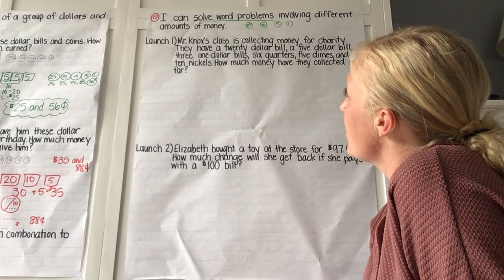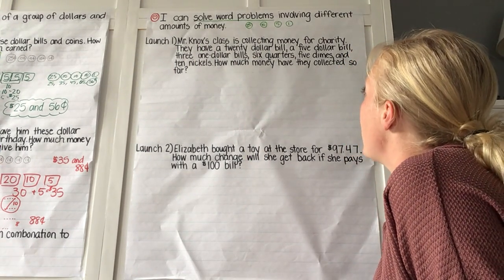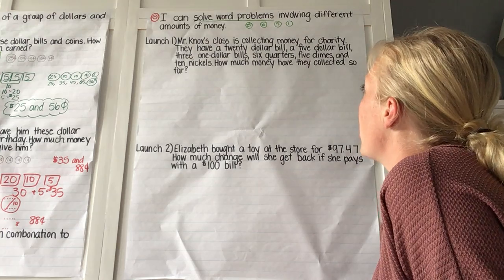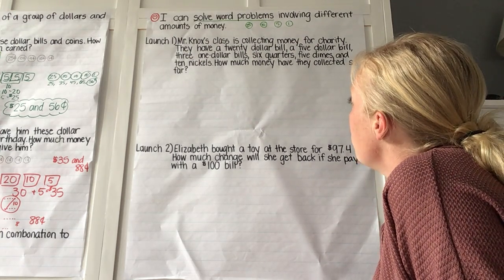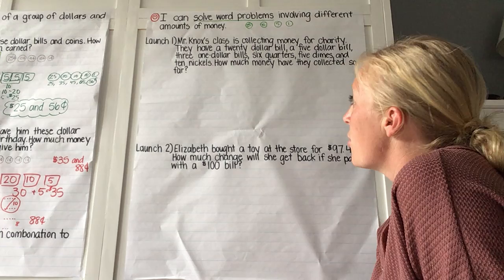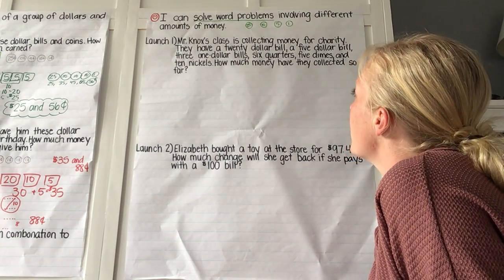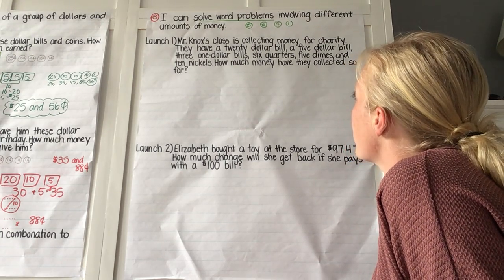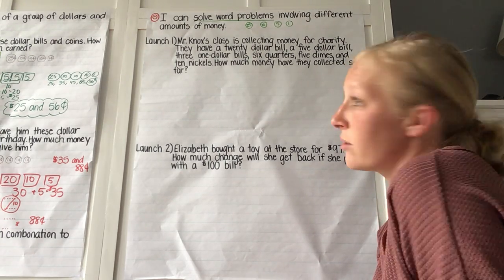Mr. Knox's class is collecting money for charity. They have a $20 bill, a $5 bill, three $1 bills, six quarters, five dimes, and ten nickels.